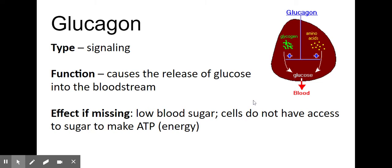The first specific protein to know is glucagon. Glucagon is a signaling protein — it causes the release of glucose into the bloodstream. This is important because we need a certain amount of glucose: too little gives us low blood sugar, too much gives us high blood sugar. We need sugar in order to make ATP.